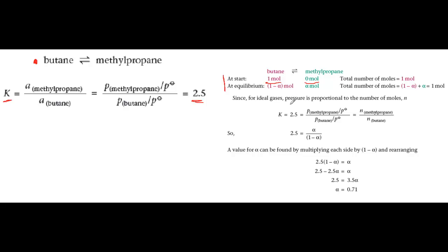Now look at the situation at equilibrium. We call the mole fraction of butane that has reacted alpha. If a fraction alpha of butane has reacted and if we started with one mole, there are one minus alpha moles of butane left and alpha moles of methylpropane product have been formed.